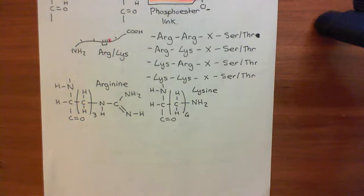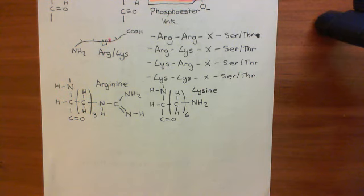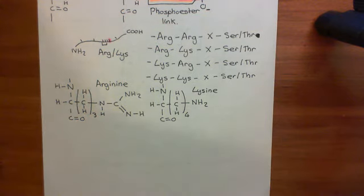This phosphorylation happens to serine and threonine residues in a vast plethora of proteins and can modulate the function of that protein — either increasing or decreasing its activity. That now concludes our discussion of the adenylyl cyclase protein kinase A pathway.